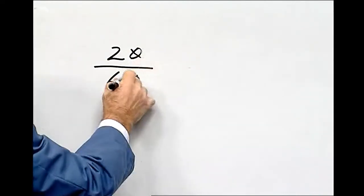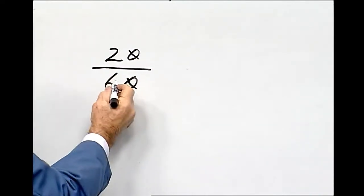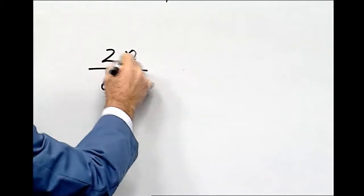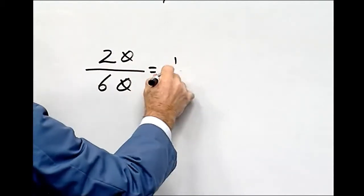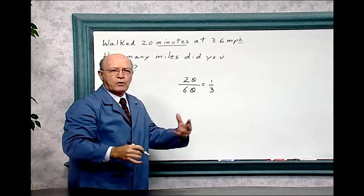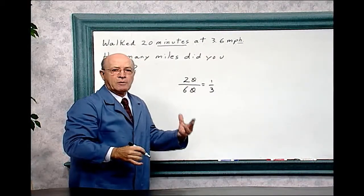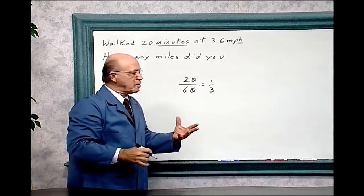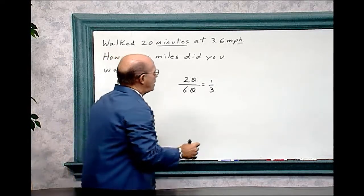And we can remove each zero from this fraction. So then we have two-sixths, divided by two equals one over three. So 20 minutes equals one-third of an hour.